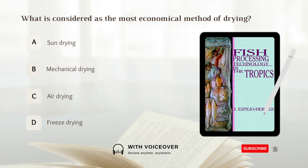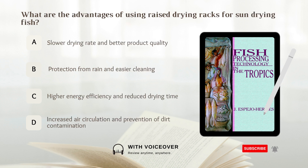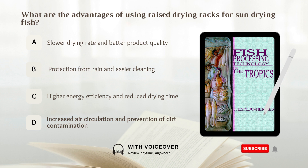What is considered the most economical method of drying? A. Sun drying. B. Mechanical drying. C. Air drying. D. Freeze drying. The answer is A, sun drying. What are the advantages of using raised drying racks for sun drying fish? The answer is D, increased air circulation and prevention of dirt contamination.